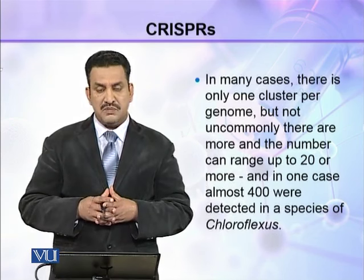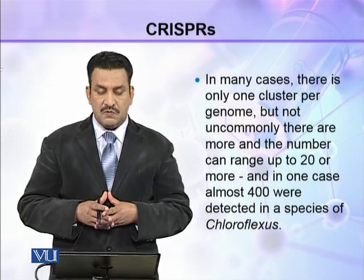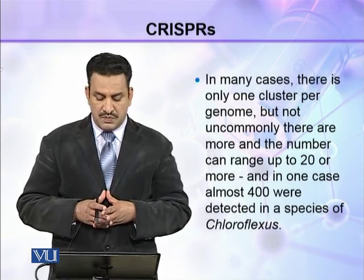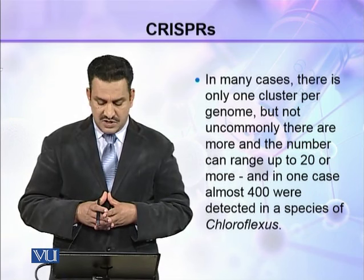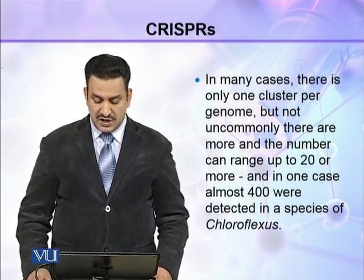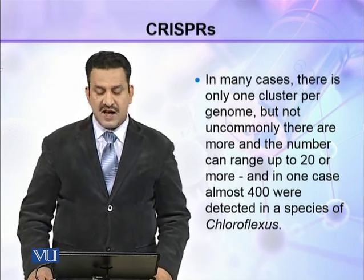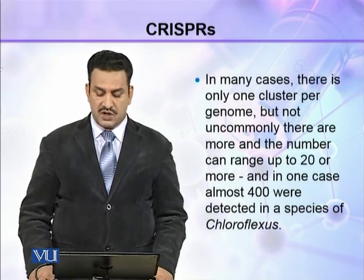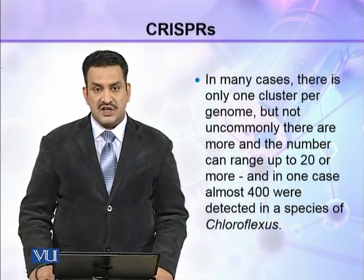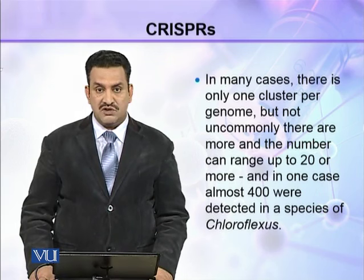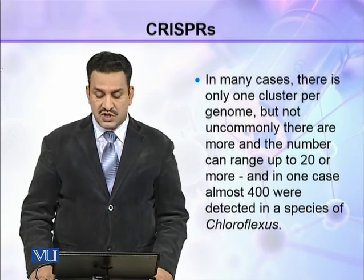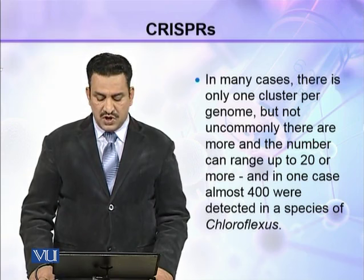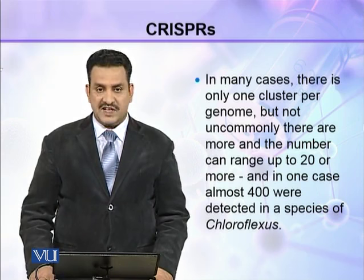In many cases there is only one cluster per genome, but not uncommonly there are more, and the number can range up to 20 or even more. For example, in one case almost 400 such sequences were detected in a species of Chloroflexi.